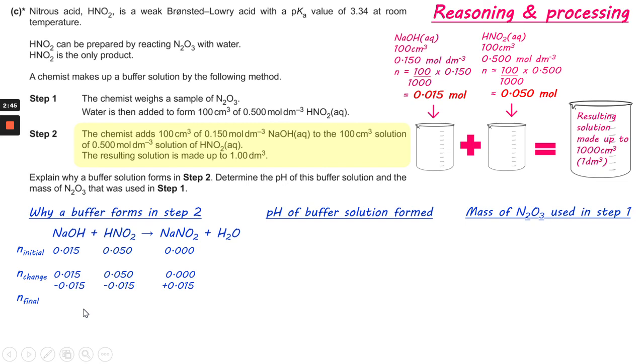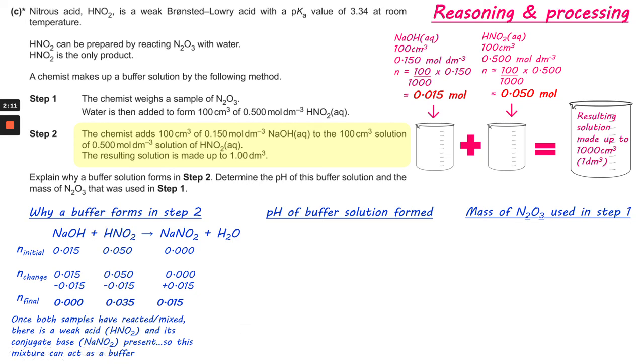So the reactants are used up. So we have NaOH is the limiting reagent. There's a lower number of moles of NaOH than there is of HNO2. So you subtract 0.05 from the starting amount and you get 0. There's no sodium hydroxide left because what's happened is it's all ended up over here as NaNO2. So essentially you've got a weak acid and its conjugate base present. So this mixture can act as a buffer.